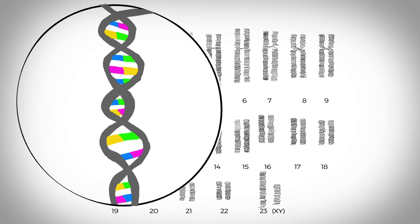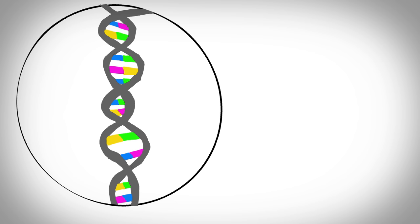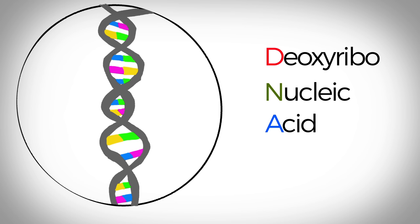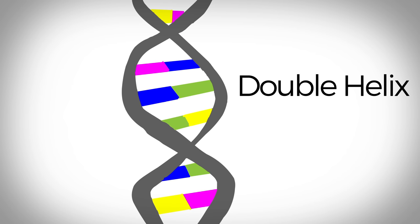The chromosomes are really long strings of DNA, deoxyribonucleic acid. DNA is shaped like a ladder that's been twisted. This shape is called a double helix.